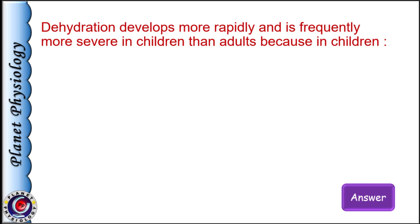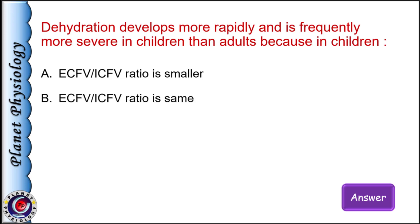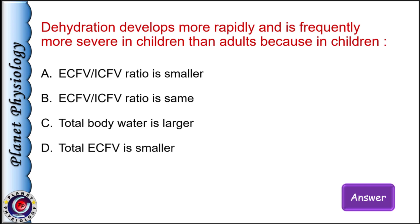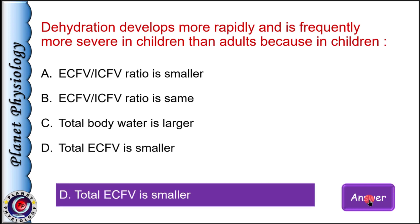Dehydration develops more rapidly and is frequently more severe in children than adults because in children: a) ECF volume to ICF volume ratio is smaller, b) ECF to ICF volume ratio is same, c) total body water is larger, or d) total extracellular fluid volume is smaller. The correct answer is option D: total extracellular fluid volume is smaller in children. The ratio of ECF to ICF is actually higher in children, but the total quantity of ECF itself is less, so even smaller fluid loss leads to rapid and severe dehydration.